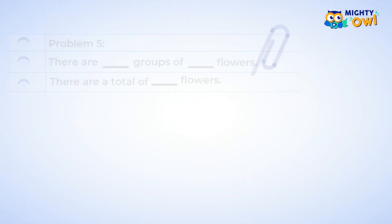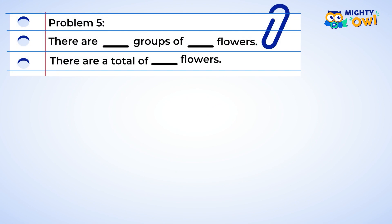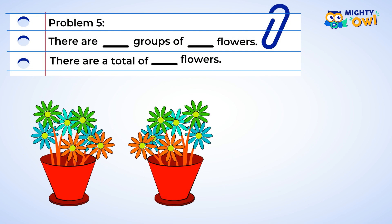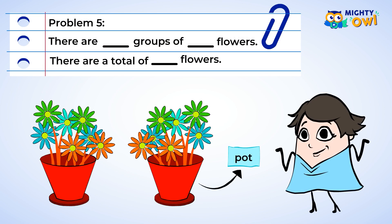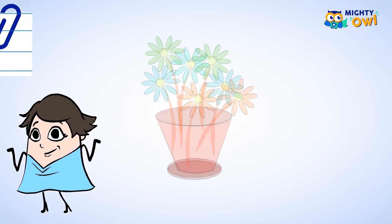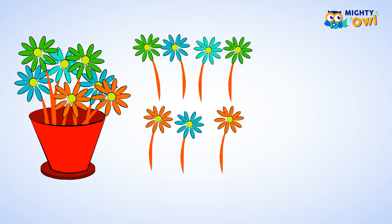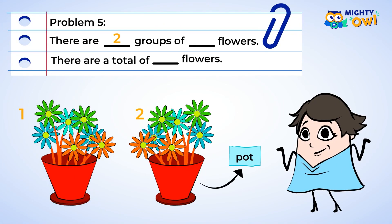Now, the last practice problem. There are flowers in a pot. The problem wants you to find out how many groups of how many flowers there are. The pots are the groups, so you can count the number of pots to find the answer to the first blank. There are two groups. Now you want to count the number of flowers in each group. There are seven flowers in each group. You have determined that there are two groups of seven flowers.